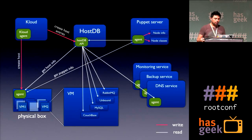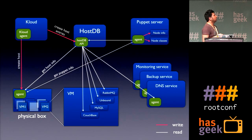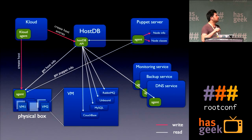Going back to the diagram — in the middle we have the host database, which has an API. This is our orchestration layer; we call it cloud. It just creates virtual machines. What you can do is have software here which creates a machine in HostDB.